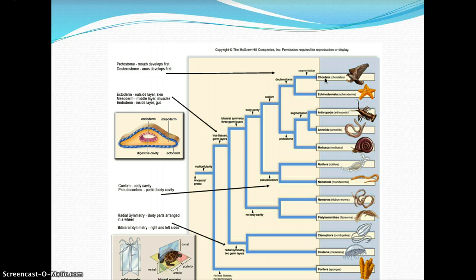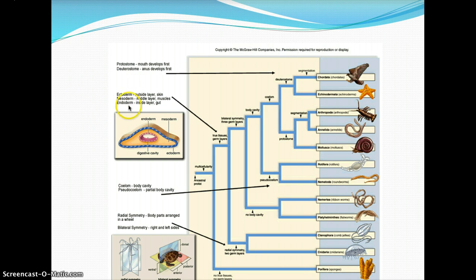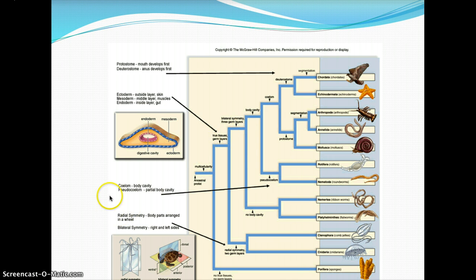At the very top are the vertebrates of phylum Chordata. In protostome development, the mouth develops first from the blastopore; in deuterostome development, the anus develops first. During the gastrula stage, the ectoderm is the outer layer and will become the skin; the mesoderm is the middle layer and develops into muscles and other tissue layers; the endoderm is the inner layer and forms the gut. The coelom refers to the body cavity; a pseudocoelom is a partial or false body cavity.